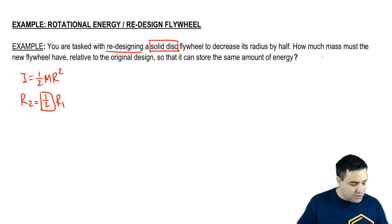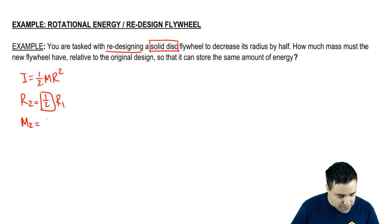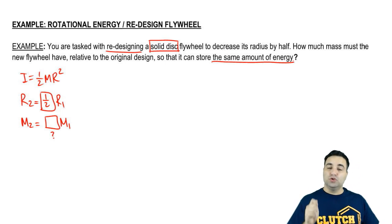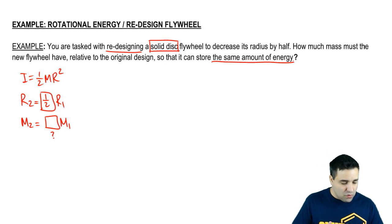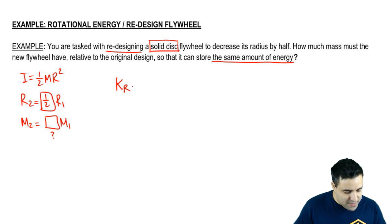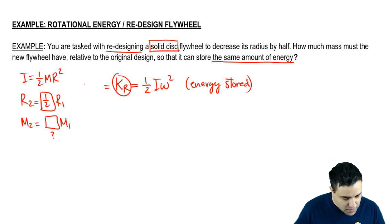And I want to know how much mass must the new flywheel have, so what's the new mass relative to the original mass so that you can store the same amount of energy? The amount of energy you stored is given by Kr, that's energy stored, which is given by half I omega squared. This is energy stored as rotational kinetic energy in a flywheel. You want this number not to change, you want this number to be a constant.